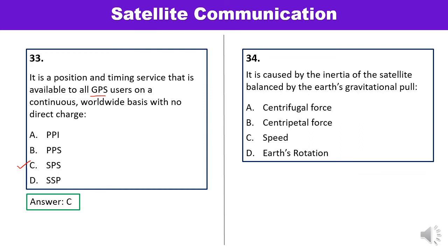Question 34: It is caused by the inertia of the satellite balanced by the Earth's gravitational pull. What is that? Options are centrifugal force, centripetal force, speed, or Earth's rotation. Centripetal force is caused by the inertia of the satellite, which balances the Earth's gravitational pull. Answer B is correct.